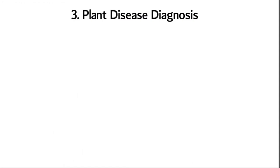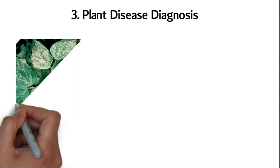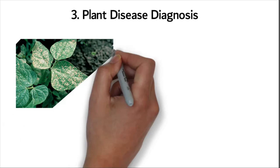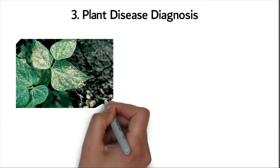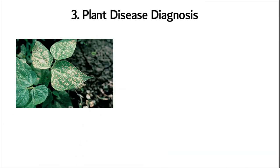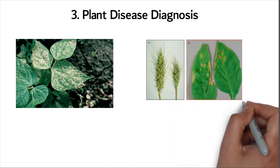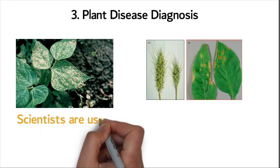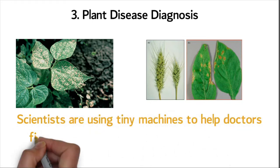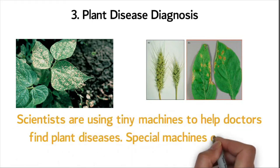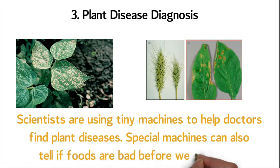Plant Disease Diagnosis. Some molecules can be used to help find plant diseases before they spread to other plants. They help scientists by detecting plant diseases and letting farmers know what to do about them. Many plants get sick. Scientists are using tiny machines to help doctors find plant diseases. Special machines can also tell if foods are bad before we eat them.